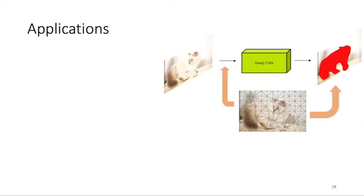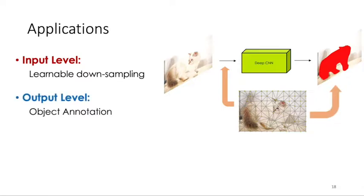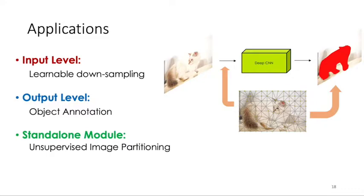For downstream tasks, we apply our deformable grid to different levels of image processing: to the input level for learnable downsampling, to the output level for object annotation, and treat it as a standalone module for unsupervised image partitioning.